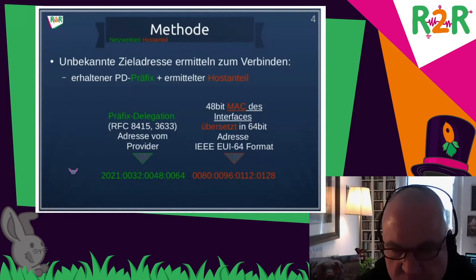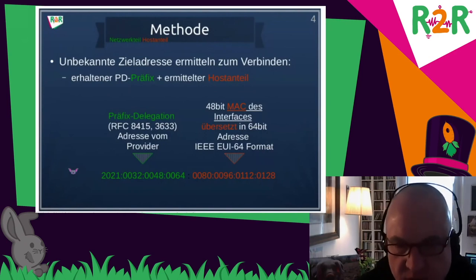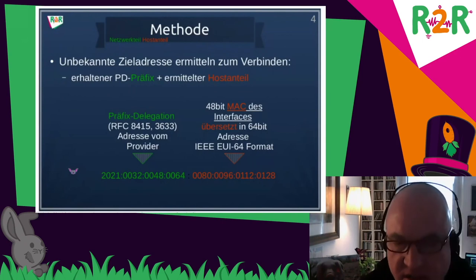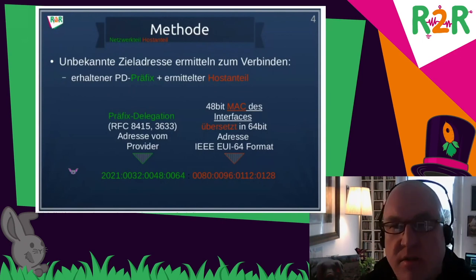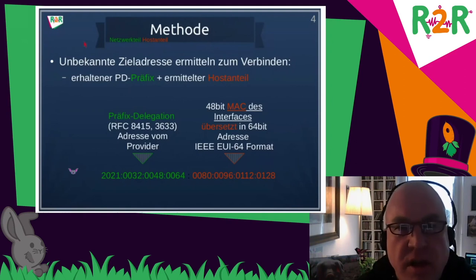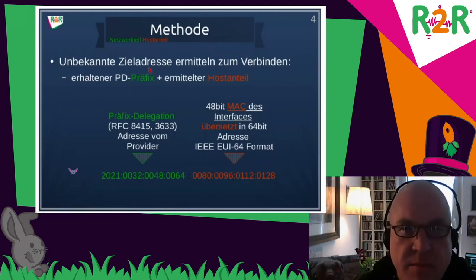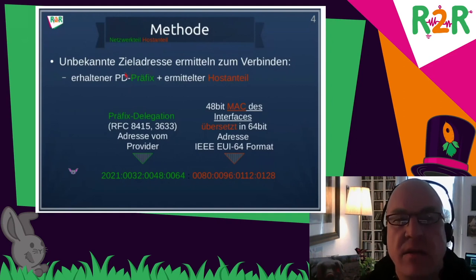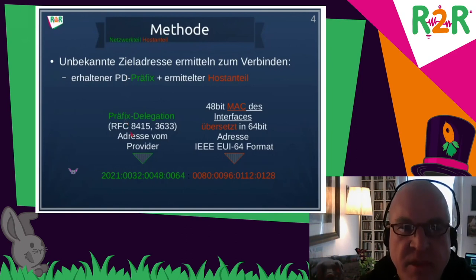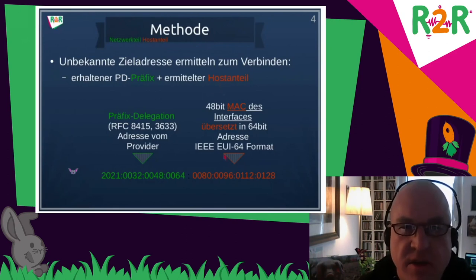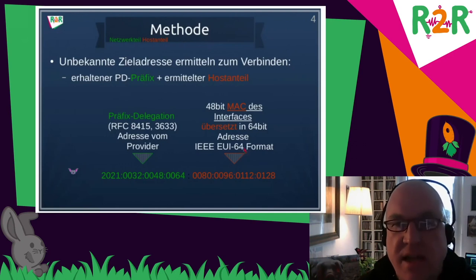The idea I want to present — the method — is: how can I find the target? Just like mail, you need an address. I want to show you how to get the unknown target address. I am using a prefix for that and a prefix delegation, which I get from my provider. And for the host part, I am translating the 48-bit MAC address into a 64-bit address.